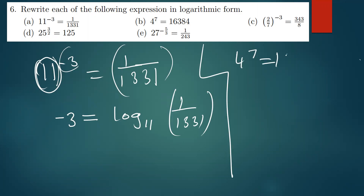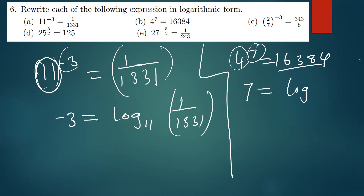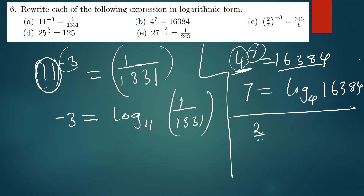Moving on to the next one: 4 to the power 7 equals 16384. How do we write this into log form? The base will still remain the base. The power is 7, so I write 7 equals log of 16384, base 4. I still write my base there.